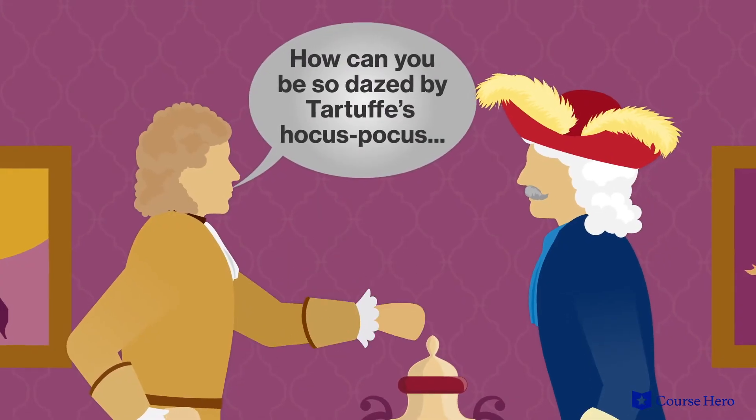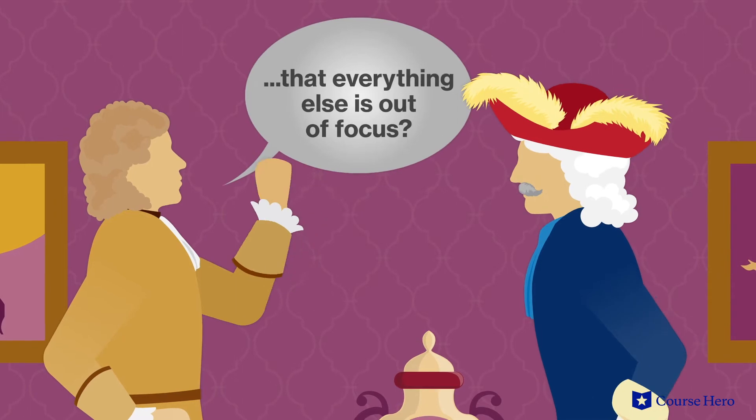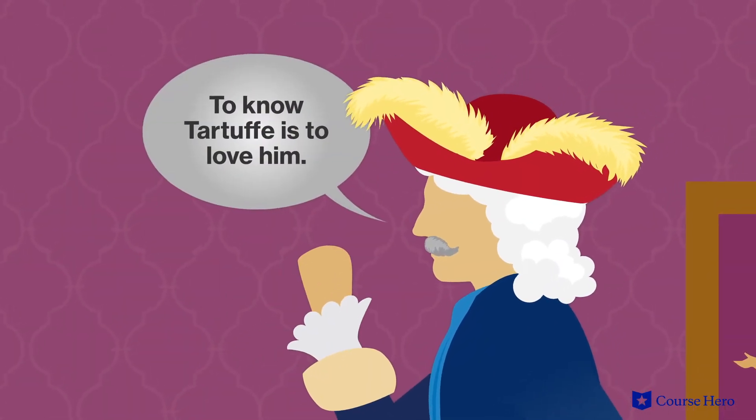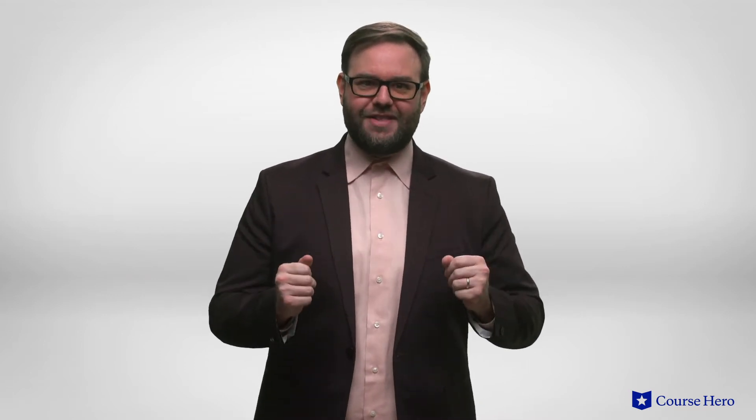In Act 1, Scene 5, Doreen exits and Cléant takes his brother-in-law to task. How can Orgogne be so dazed by Tartuffe's hocus-pocus that everything else is out of focus? Orgogne explains that to know Tartuffe is to love him. Tartuffe has freed Orgogne's soul from earthly loves and every human tie. If only Cléant had seen Tartuffe in church, he'd feel the same.